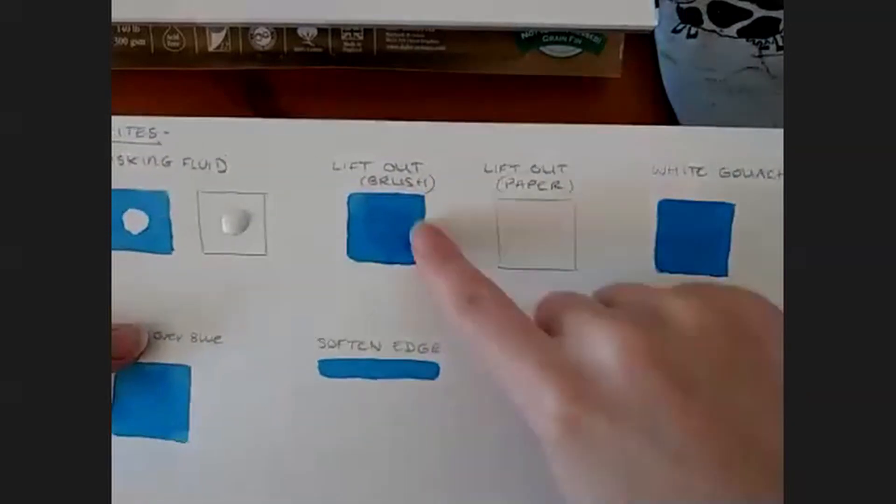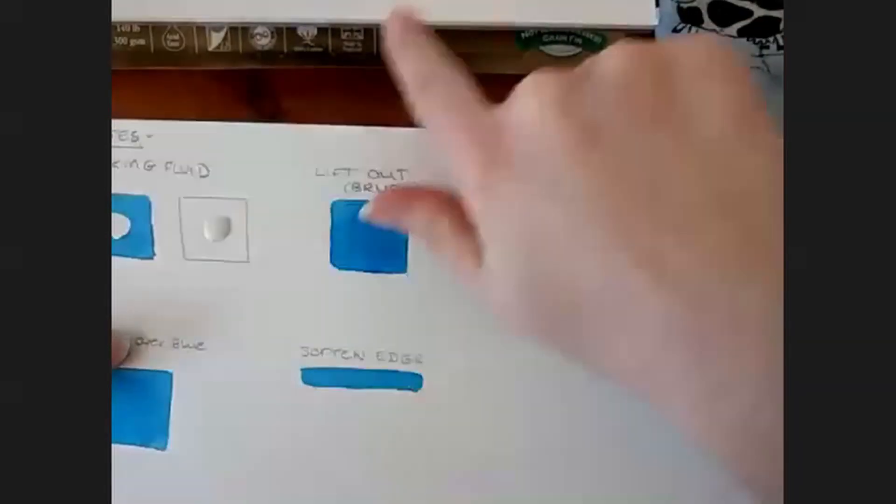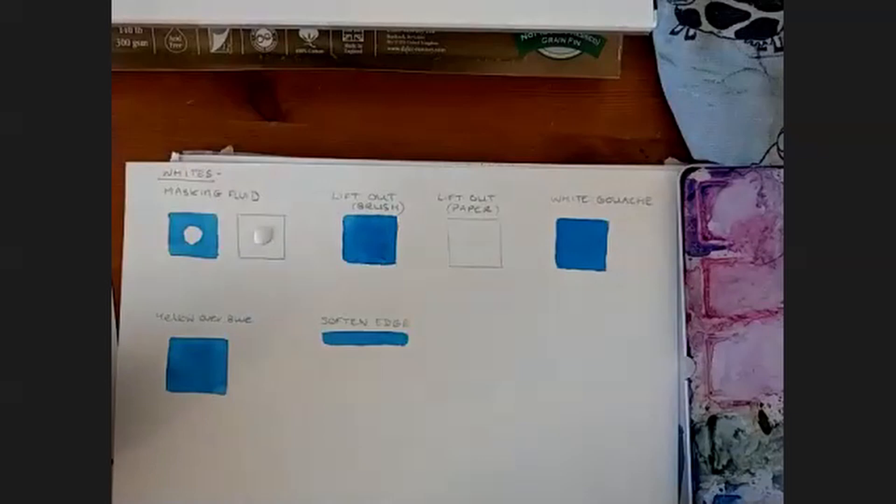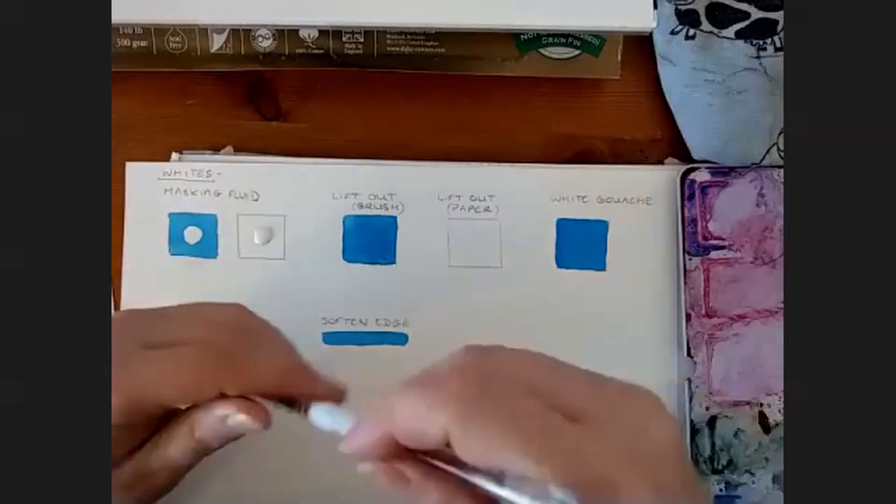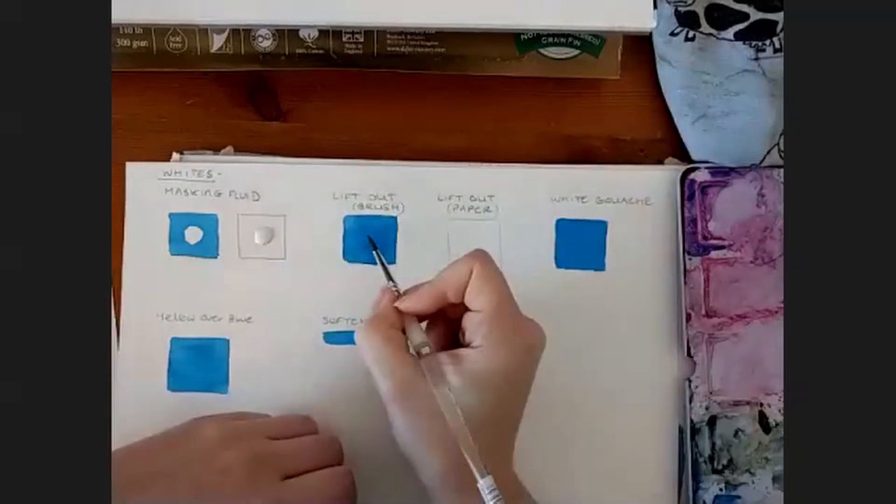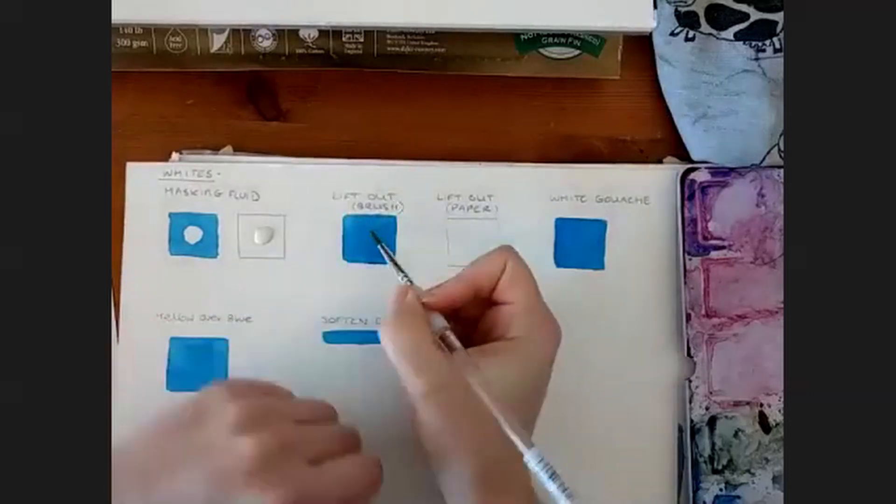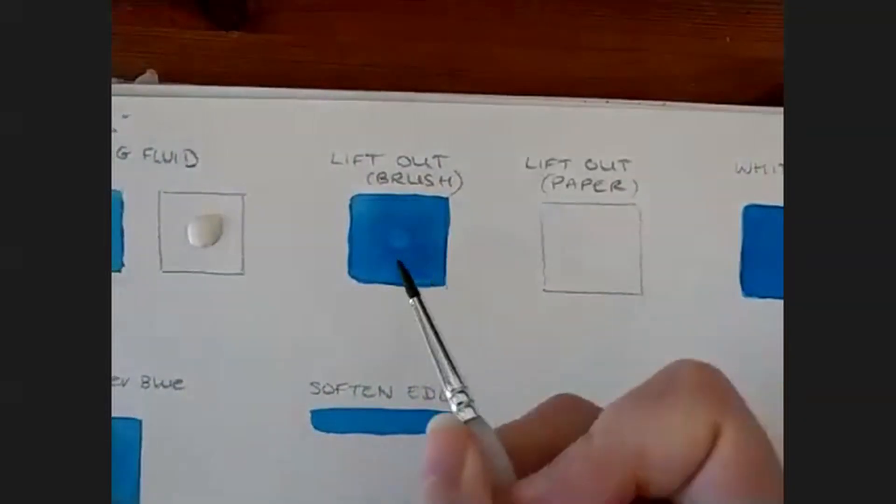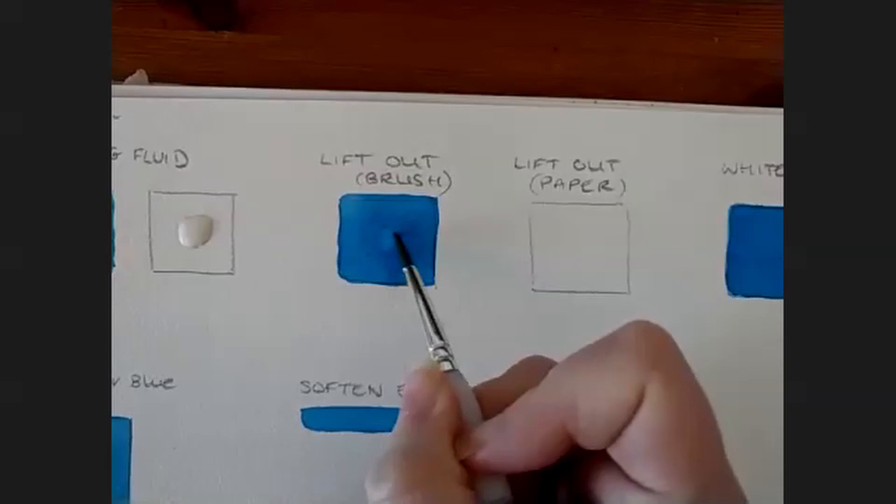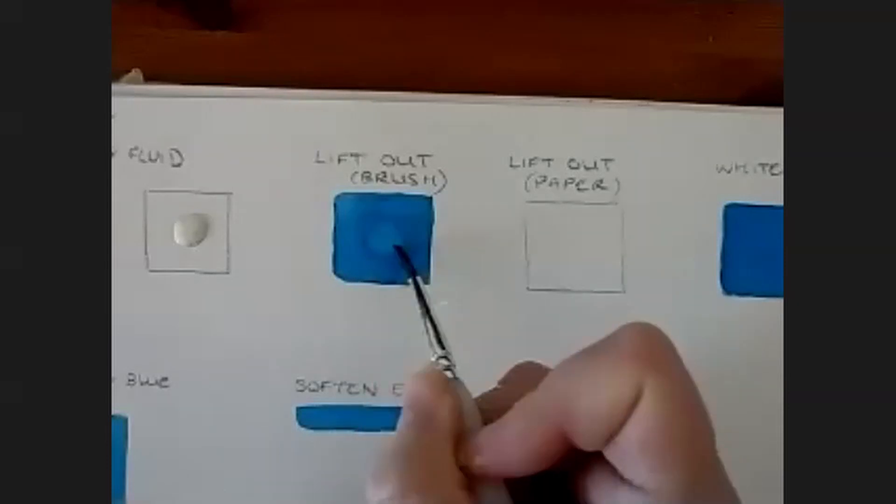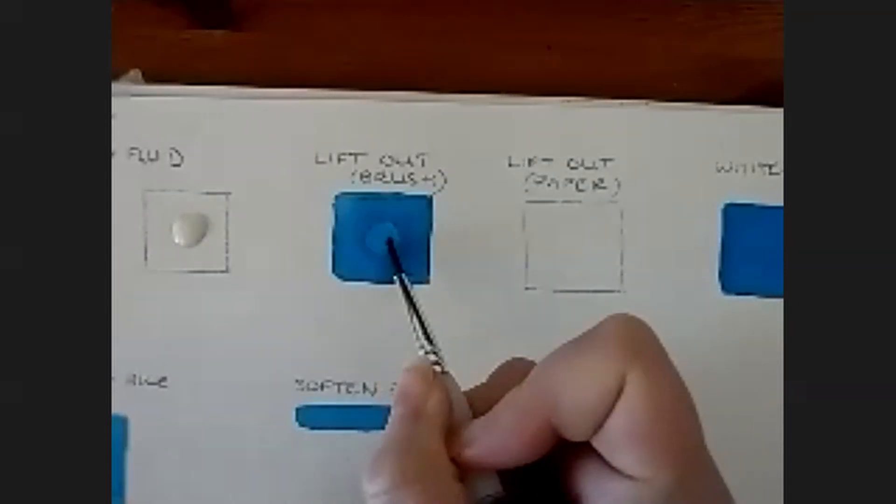The other way to lighten up, if you've gone over something, is to lift out using your brush. So this is dry blue paint. If I just take a small brush and wet it, just dab off some of that excess water. I don't want to add loads of water. I just want enough that it starts to move the paint. If I start to work into this, it starts to reactivate that paint on the paper. You can see it starts to move around a little bit again.